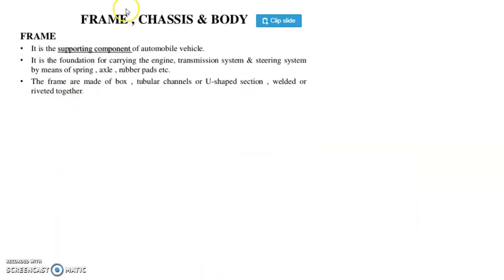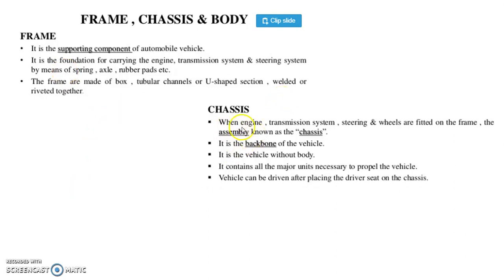What is the difference between frame, chassis and body? The frame is the supporting component of the automobile vehicle. It is the foundation for carrying the engine, transmission system and steering system by means of springs, axles, rubber pads, etc. Frames are made of box, tubular, channel or U-shaped sections welded or riveted together. Chassis is the assembly when the engine, transmission system, steering and wheels are fitted on the frame. It is the backbone of the vehicle — a vehicle without a body. It contains all the major units necessary to propel the vehicle.